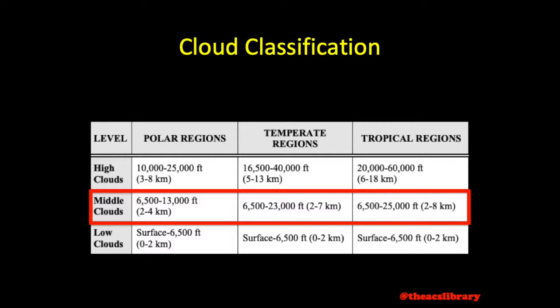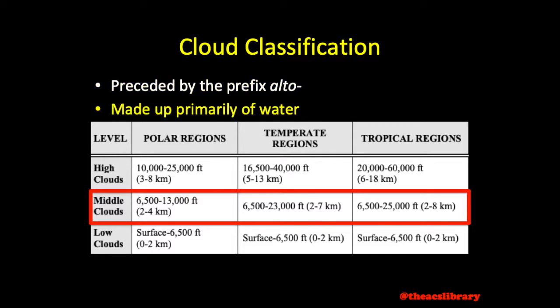The mid-altitude clouds, preceded by the prefix 'alto,' are composed primarily of water. The heights of the bases of these clouds range from 6,500 to 25,000 feet in the middle latitudes.